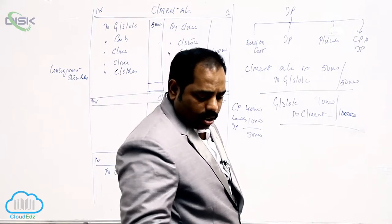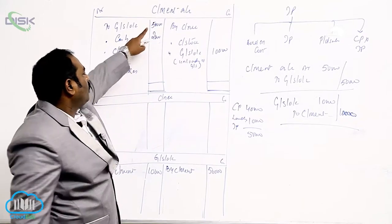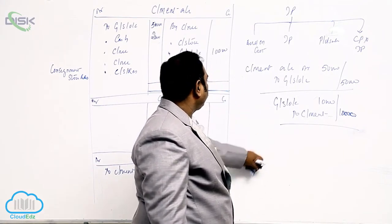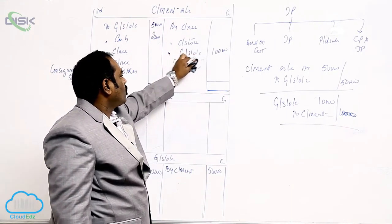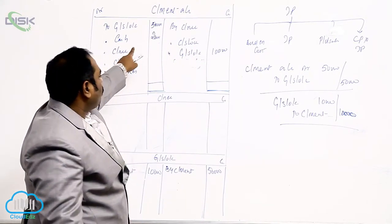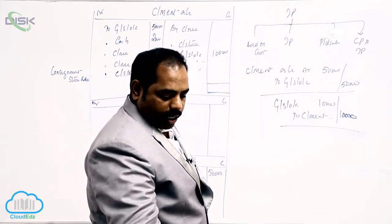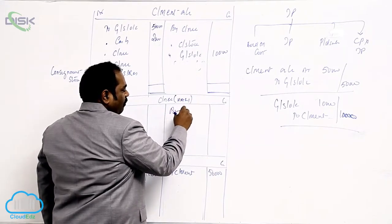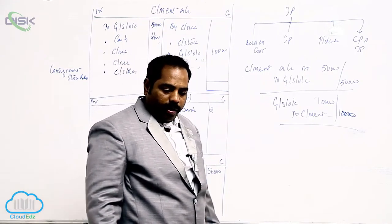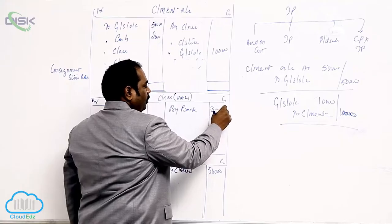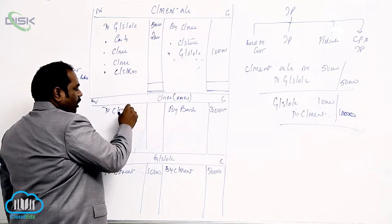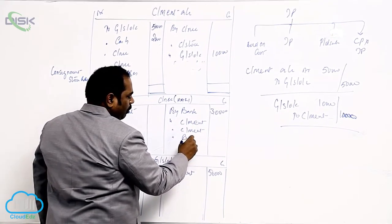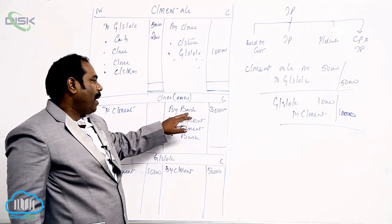Radha paid 2,000 for forwarding charges - this is an expense met by the consigner, so the entry is Consignment Account Dr. to Cash. Hari advanced 30,000 to Radha. Hari is the consignee and he is giving an advance of 30,000. Write 30,000 - By Bank. In the consignee's account: 'To Consignment' is for sales, 'By Bank' is for advance, 'By Consignment' is for expenses made by consignee and for commission, and 'By Bank' is for settlement. The entry is Bank Dr. to Consignee for the advance.